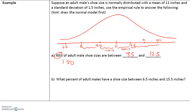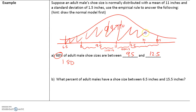What percent of adult males have a shoe size between 6.5 and 15.5 inches? Since 6.5 is three standard deviations below the mean and 15.5 is three standard deviations above, the empirical rule tells us that 99.7% of values fall within three standard deviations — so 99.7% of adult males have shoe sizes between 6.5 and 15.5.